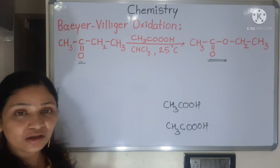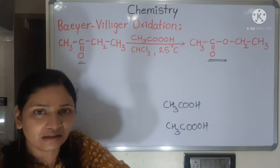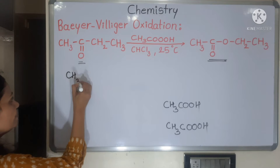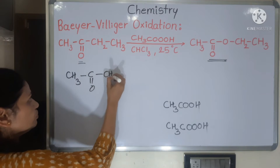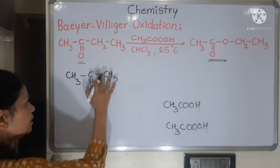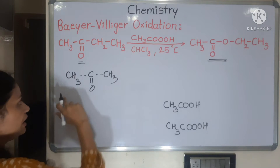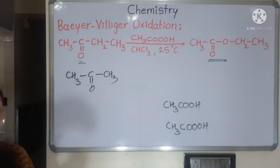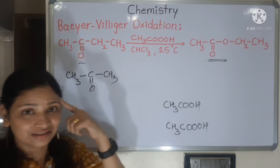So that is Baeyer-Villiger oxidation reaction. If your ketone is symmetrical — for example CH3-C(=O)-CH3 — oxygen can be inserted on either side, so it doesn't matter. But when your ketone is unsymmetrical, you have to think carefully about which side the oxygen goes.